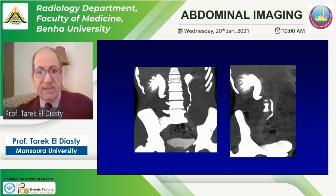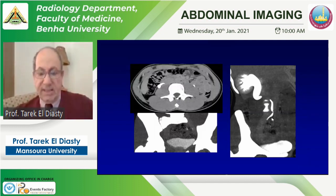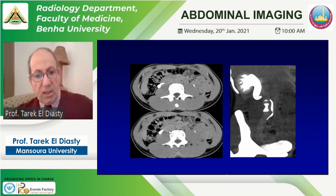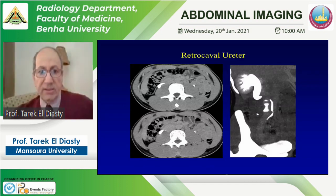This is an example of CT urography — a scan in the excretory phase, after approximately five to seven minutes. We can see the course of the right ureter. On the axial images in the delayed excretory phase, we can identify the aorta and the inferior vena cava, showing that this ureter has a retroaortic course — a case of retrocaval ureter. No early scan is needed; we can diagnose it on this excretory scan alone.